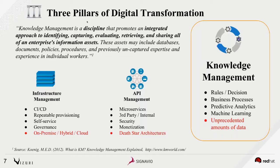The other two pillars are infrastructure management — how we do cloud computing — and API management, which is how people get access to your systems. Knowledge management is a discipline: an integrated approach to how you identify, capture, evaluate, and share your information assets — business rules and business processes. They're databases, policies, and uncaptured expertise. In knowledge management, we have to address rules and decisions, how they affect business processes, which leads to transformation and making your business agile.